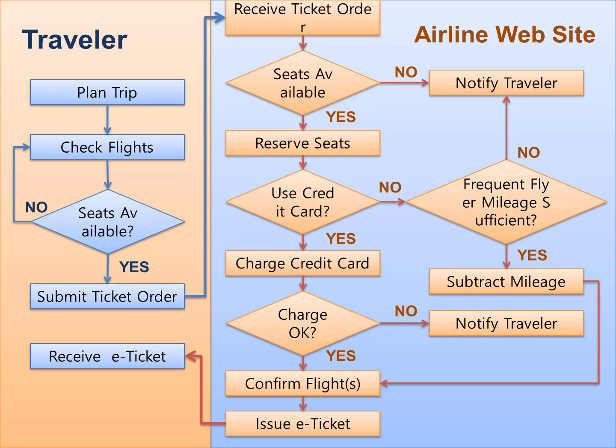This diagram shows something that may be familiar to a lot of students. If you have reserved an airline ticket online using Travelocity or some other website, this may be familiar to you. On the left hand side, we see a traveler, and you see this is a flowchart. We have a logical flow: we begin to plan a trip, we check flights. If seats are available, we continue on to submit an order. If seats are not available, we continue checking flights. The diamond shape represents the logic.